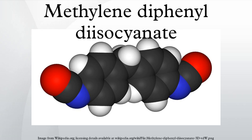The first step of the production of MDI is the reaction of aniline and formaldehyde, using hydrochloric acid as a catalyst to produce a diamine precursor under the chemical formulation: 2C₆H₅NH₂ + CH₂O → CH₂(C₆H₄NH₂)₂ + H₂O. Then these diamines are treated with phosgene to form MDI. The isomer ratio is determined by the isomeric composition of the diamine.